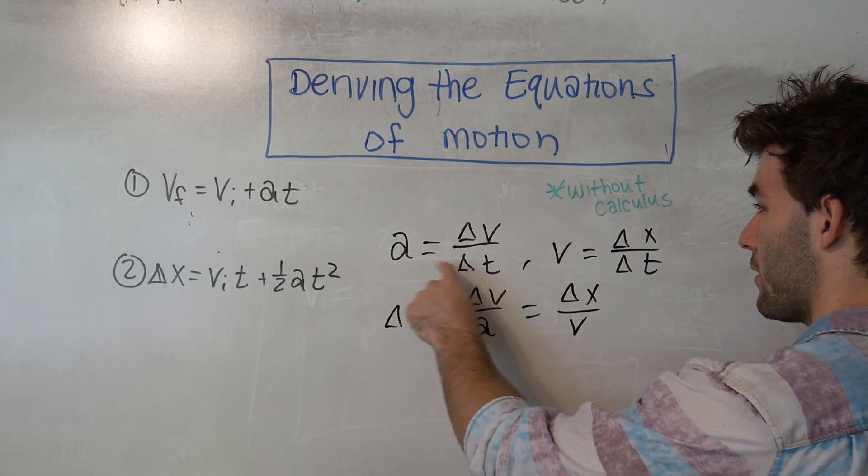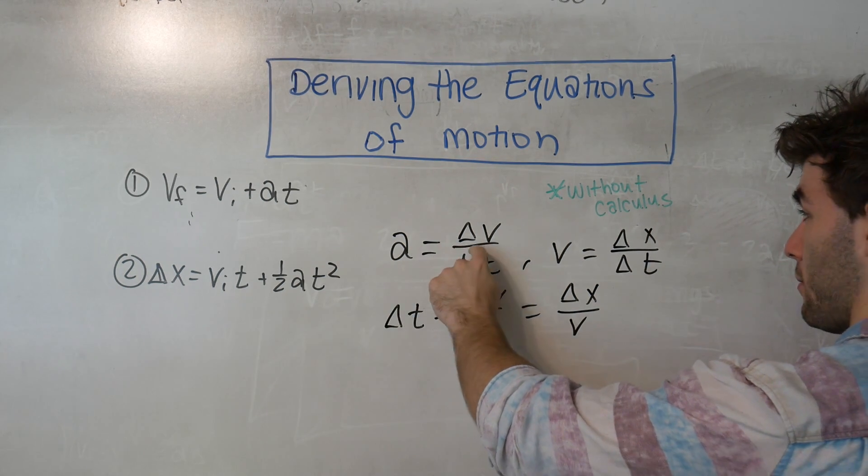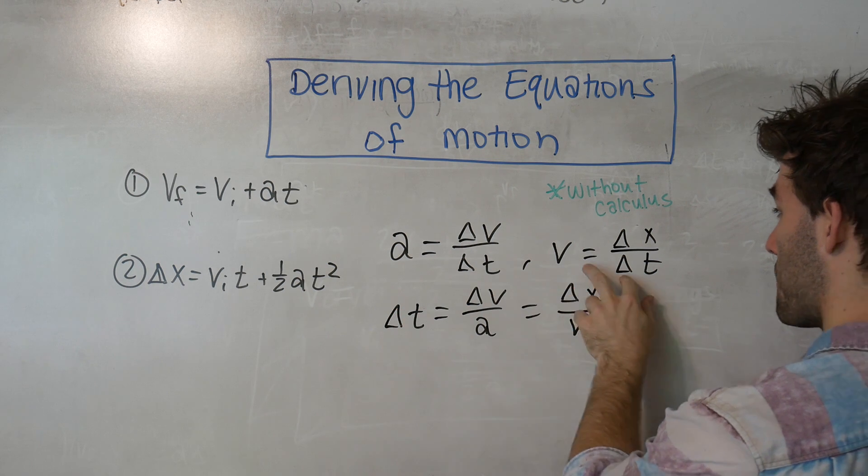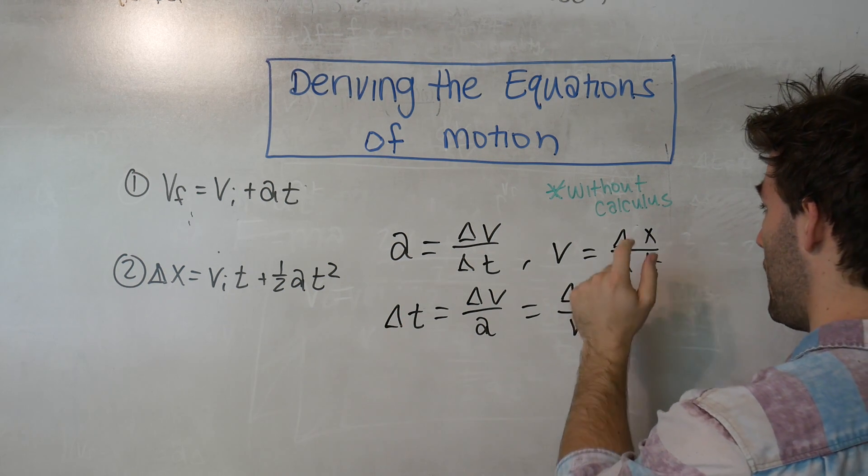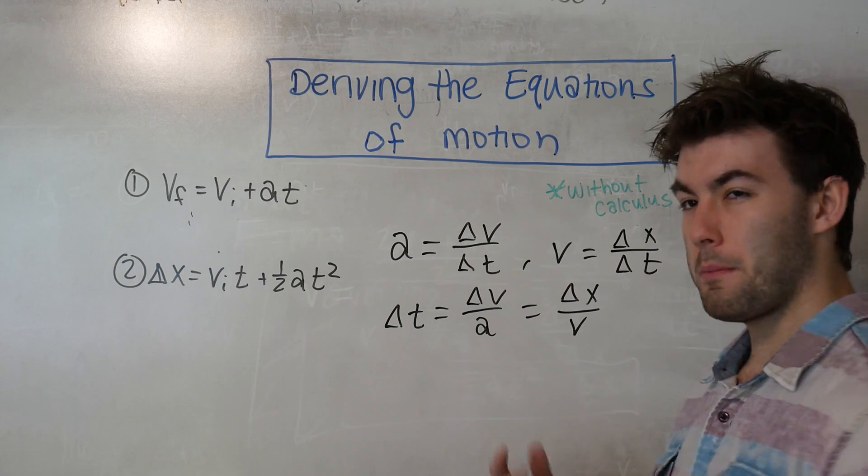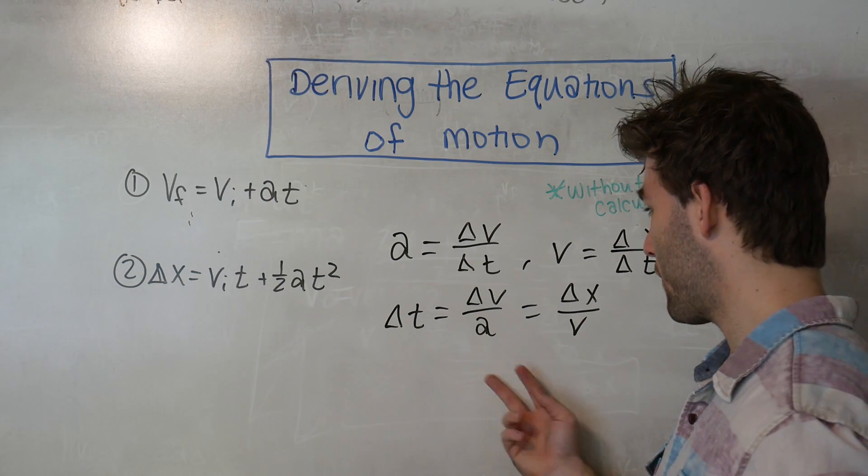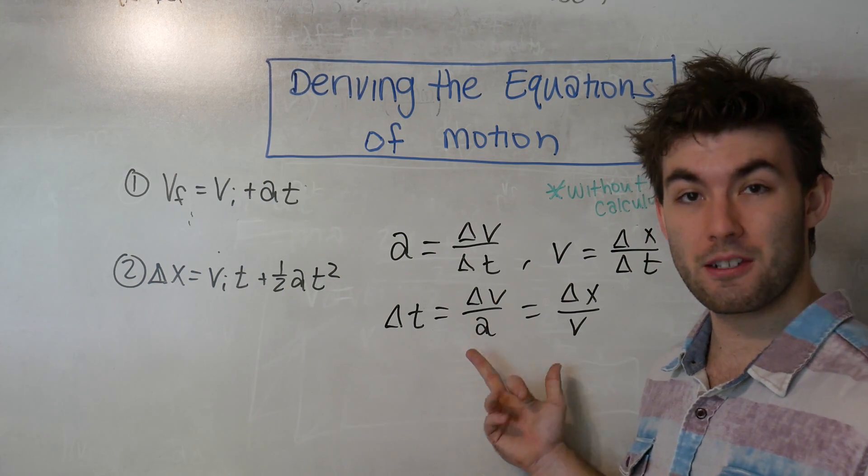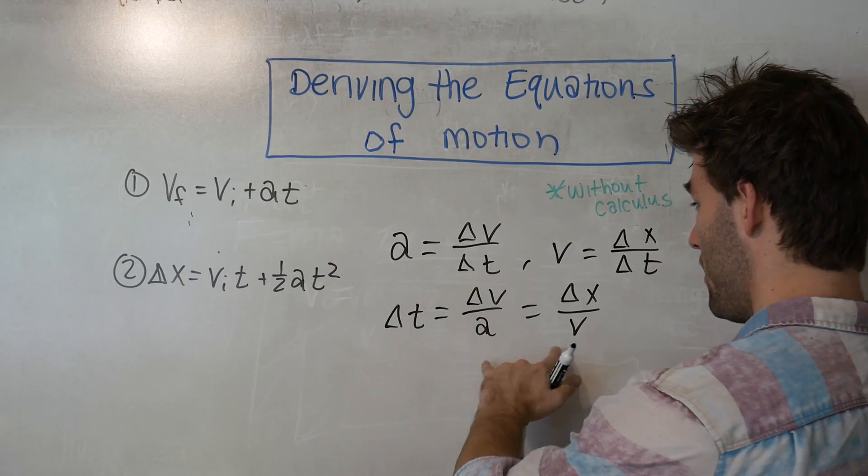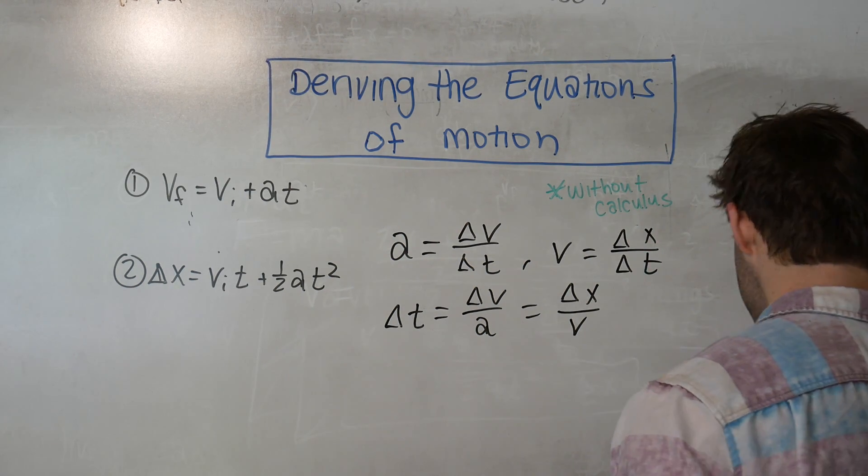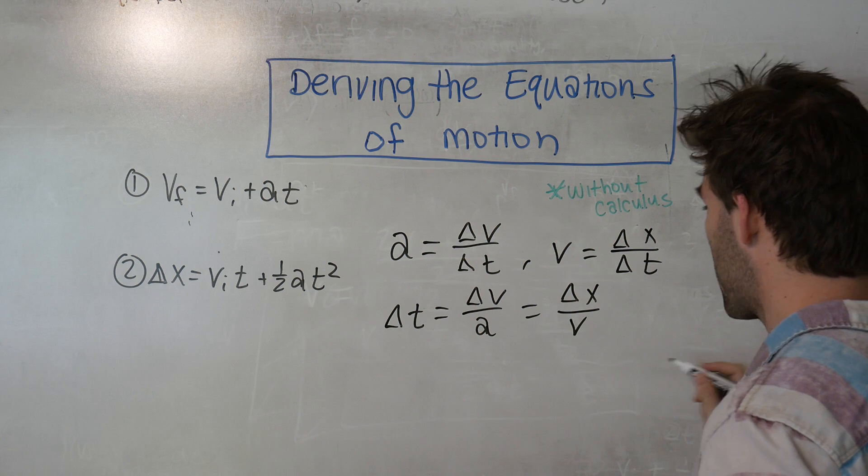If we can solve for delta T and say delta T is equal to delta V over A, and then over here we're saying that delta T is equal to delta X over V, if we can make an argument that it's equal to two different things, then those two different things must actually be equal. So we're going to set them equal to each other. Okay, so now what we're going to do is do a little bit of cross multiplication,